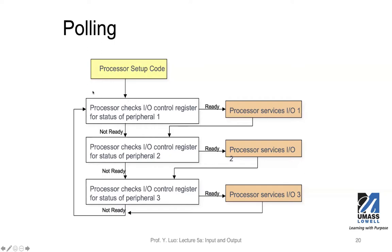Let me repeat a little bit on this slide. Polling is where the processor has to do all the heavy lifting. Starting with some setup code, the processor will be busy checking the IO control register or status register to find out the status of the peripherals. Every peripheral typically has a control or status register, or a combination of those two. From checking the register, the processor can find out whether data is ready to be read into the microprocessor, or if the resource is free for sending out data.